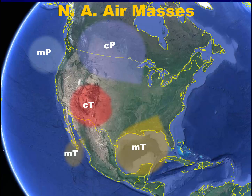The maritime tropical gulf air mass is very common and affects the southeastern United States. Maritime tropical Atlantic and maritime polar Atlantic are actually fairly rare. Because we live in the westerlies, these last two air masses do not affect our weather nearly as much.